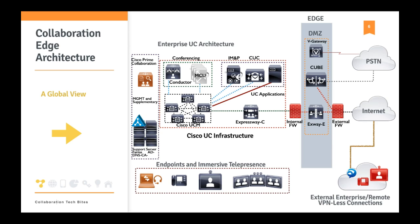In this slide we see the enterprise UC architecture — the internal enterprise Cisco UC infrastructure and the edge network. The internal enterprise UC architecture includes Cisco Unified Communication Manager, conferencing solution, IM and presence, and Unity Connection for voicemail service, as well as other UC applications such as UC-CX or UC-C. It also includes management components like Cisco Prime Collaboration assurance, analytics, provisioning, and Cisco Prime Infrastructure to monitor the underlying switches and routers, plus supplementary servers such as Active Directory, DNS server, and certificate authority.